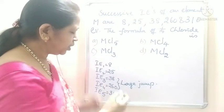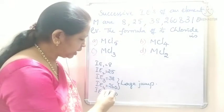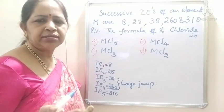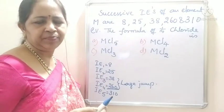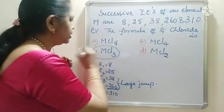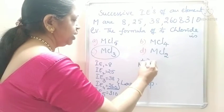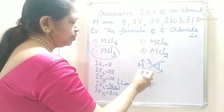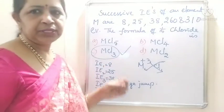There are 3 valence electrons, and to remove the fourth electron it must be removed from the inner orbit, which is why a large amount of energy is required. So element M has 3 valence electrons in the outermost orbit and its valency is +3. The formula of its chloride will be MCl₃, because M³⁺ and Cl⁻ combine — the 3 comes here and the 1 goes there — giving MCl₃. Option C is the correct answer.